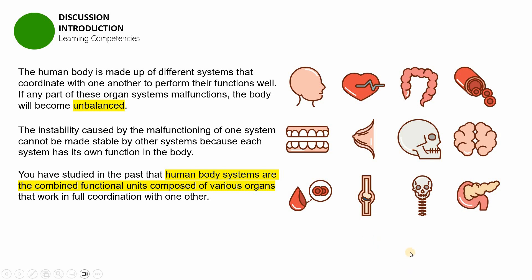And if you put ecosystems together, you will be composing the entire biosphere. There are certain biological levels, and at the organ system level, an organ system is a group of various organs.